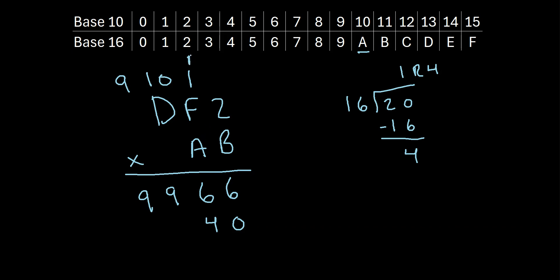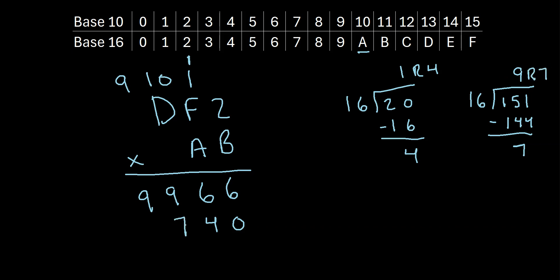Next, A times F plus 1. A is 10, F is 15, so 10 times 15 is 150, plus 1 is 151. We ask how many 16s go into 151. 16 times 10 is 160, so that's too many. 16 times 9 is 144, and 151 minus 144 is 7. So we get 9 with a remainder of 7. We write the remainder 7 here and carry the 9 to the next column.